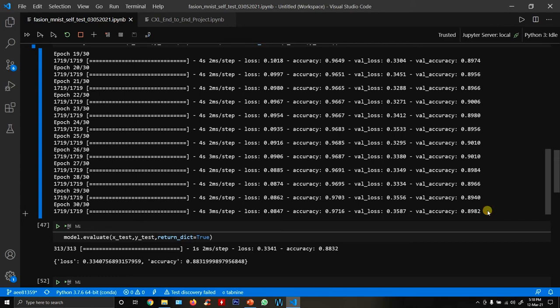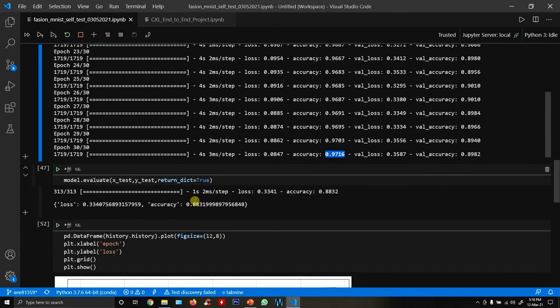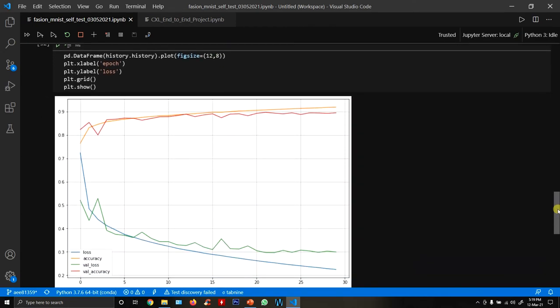At the end you see our validation accuracy, which is what matters, is 89% - roughly close to 90% accuracy on validation, whereas 97% accuracy on my training dataset. On my test dataset, which is data never seen by our model, we're having an accuracy of 88%, which is very good.